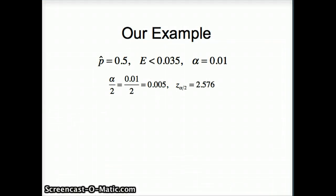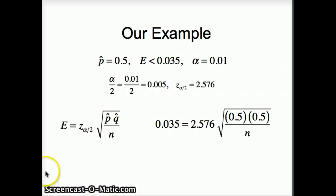We want to use this information in the computation. So our formula is E equals Z-alpha by 2 root p-hat q-hat over n. E, this time we want 0.035, Z-alpha by 2 is 2.576, root 0.5 times 0.5 over n. And we want to solve for n.